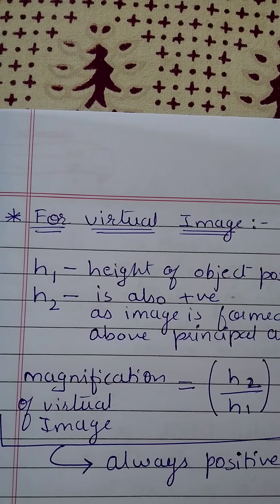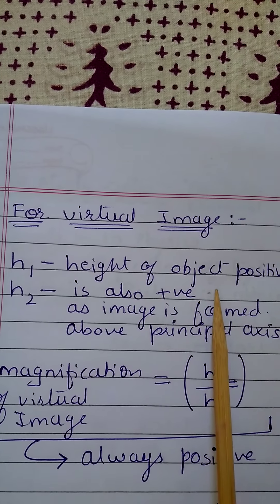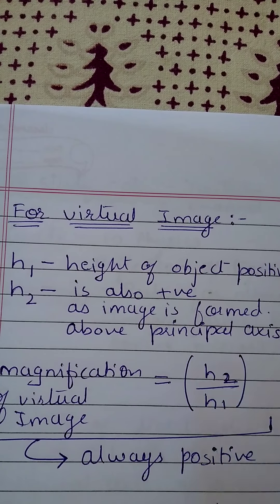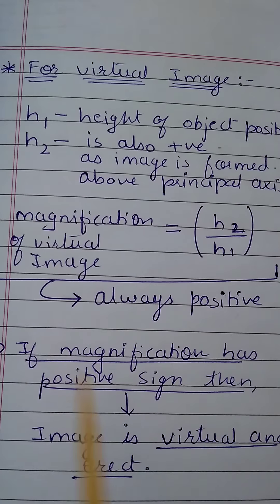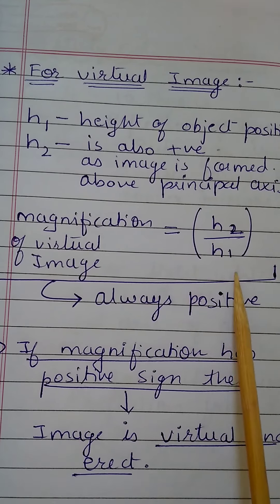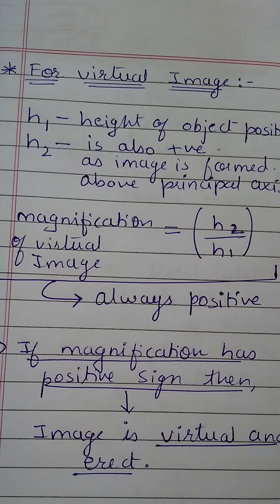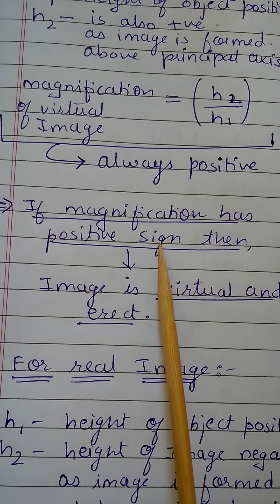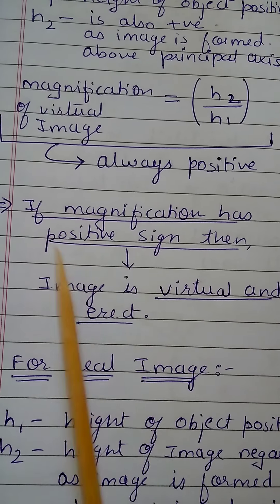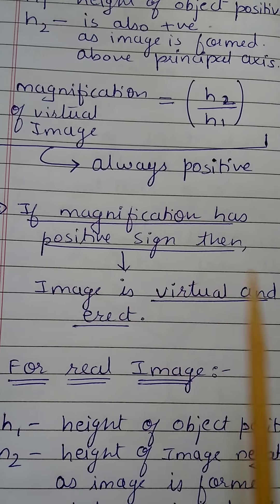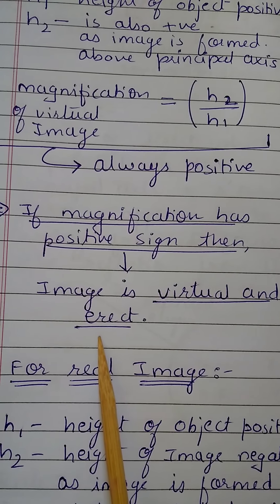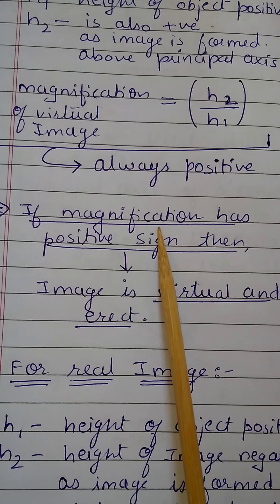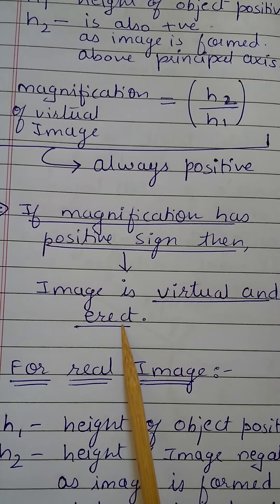For a virtual image, H1 is the height of the object and is positive, and H2 is also positive as the image is formed above the principal axis. So magnification of a virtual image, H2 upon H1, is always positive. If in a numerical problem magnification is given with a positive sign, that means the image is virtual and erect.